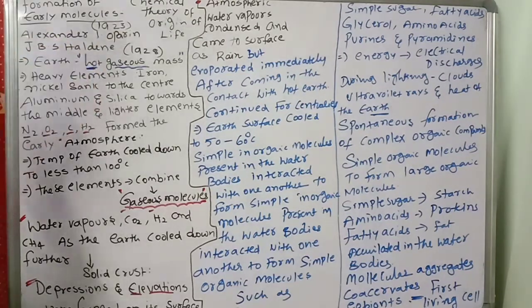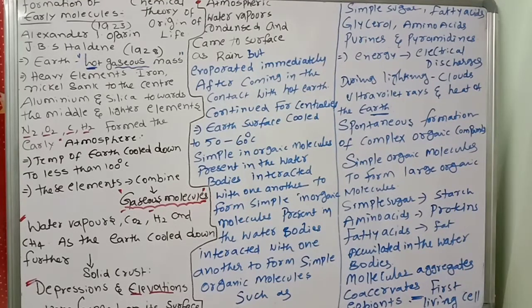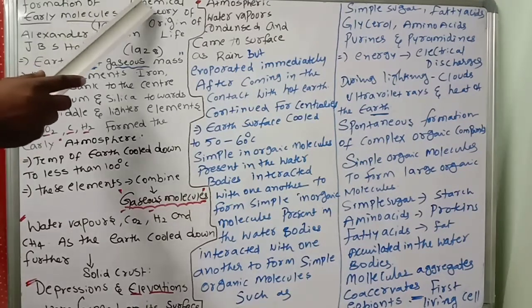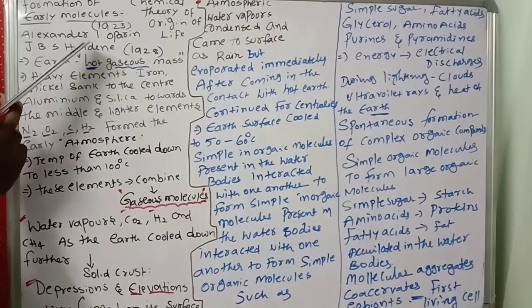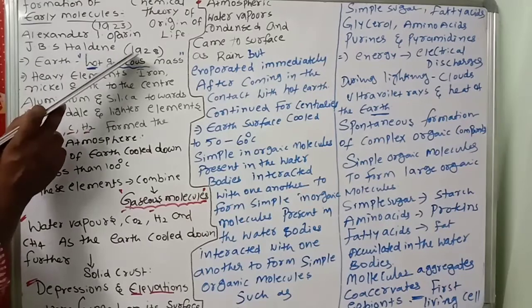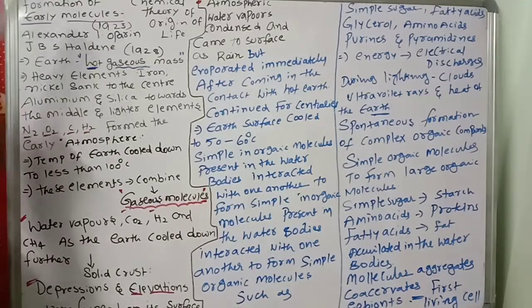We are discussing the chemical theory of origin of life. We discussed different theories — spontaneous generation theory, abiogenesis theory, biogenesis theory, and special creation. The almost worldwide accepted theory is the chemical theory of origin of life, developed by Alexander Oparin in 1923 and J.B.S. Haldane in 1928. They showed how the formation of early molecules occurred.